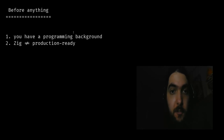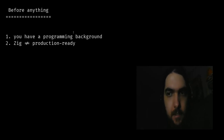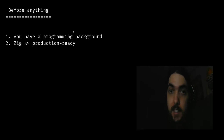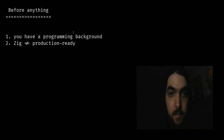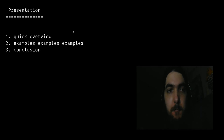Zig isn't production ready yet. The Zig team wants more fellow compiler developers to help them finish it and they aren't interested in new users just yet. That's why there isn't much documentation. So keep in mind that if you like what you see today, you'll have to read the standard library source code to know how to use it. But from my experience, both source code and developers are very friendly.